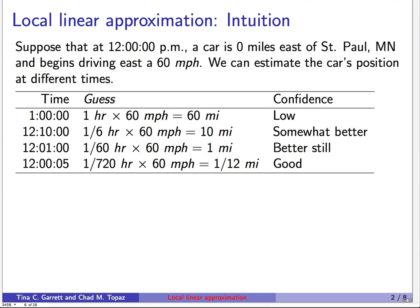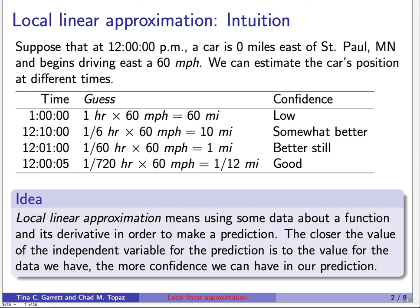This is the whole idea of local linear approximation. It just means using some data about a function and its derivative in order to make a prediction. The intuition is that the closer the value of the independent variable for the prediction is to the value where we have data, the more confidence we have. When predicting only five seconds into the future, we have good confidence; an hour into the future, there's no reason to expect our prediction is very good.